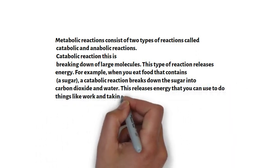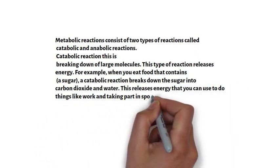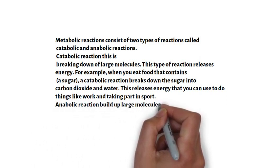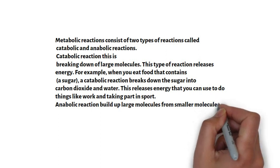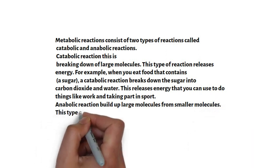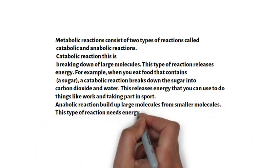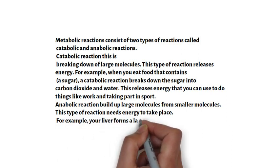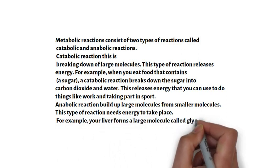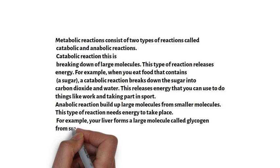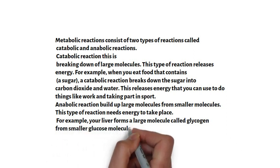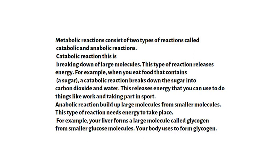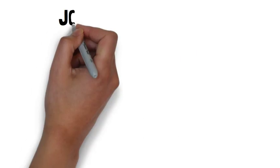Anabolic reactions involve the building up of large molecules from small molecules, and this type of reaction needs energy to take place. For example, your liver forms a large molecule called glycogen from small glucose molecules. That's all about living organisms and non-living things. If you have questions, please ask in the group. Thank you.